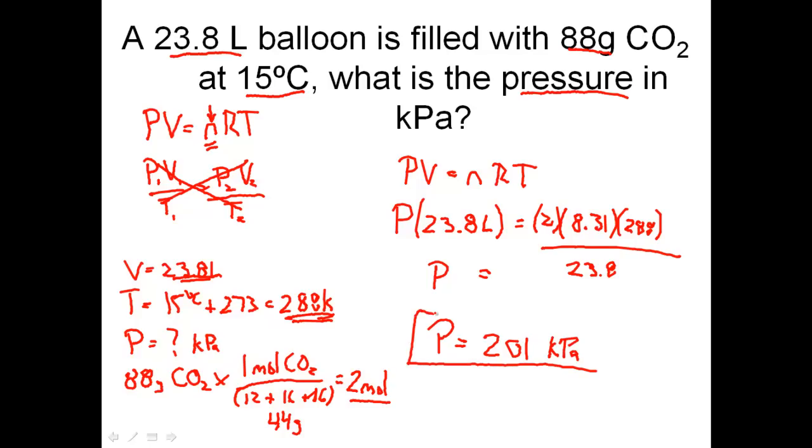Once again, choose your formula correctly. Just check your variables. Temperature must always be Kelvin. If you're going from grams to moles, divide by the periodic table mass, which in this case was 44. Your volume should always be in liters. Whatever your units of pressure is, make sure you choose the R value for that appropriate unit of measure.